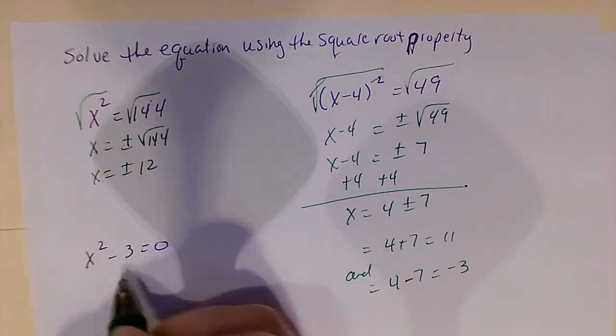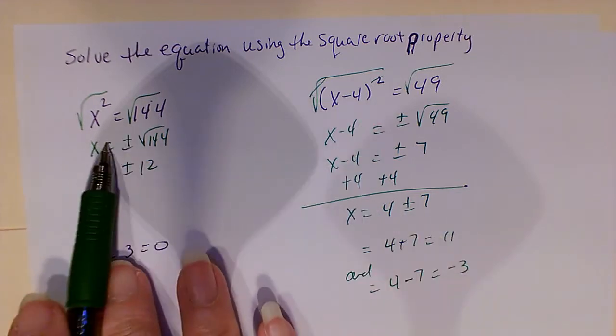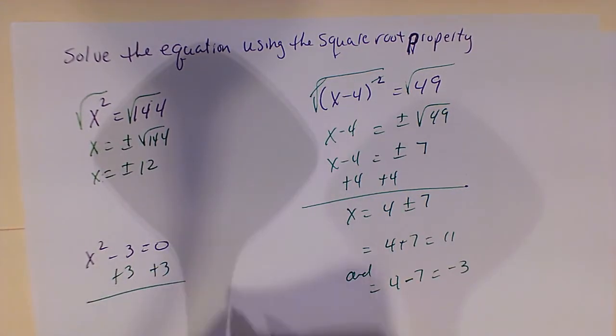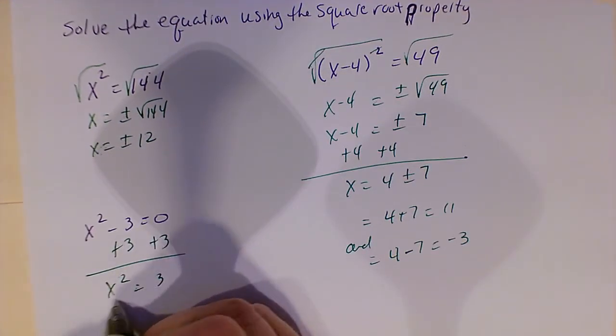Now on this one, what you have to note is that each of these were already set equal to the constant. So here I've got to move my constant over. So now I'll have x squared equal to 3.